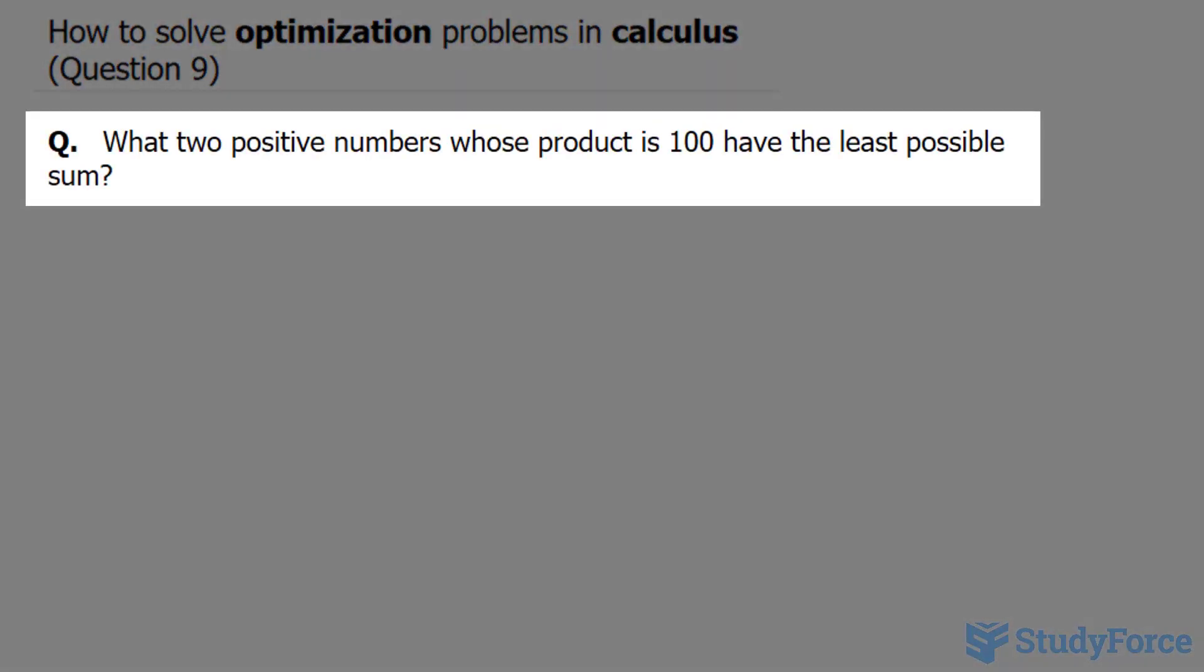In question nine of this series, we're asked what two positive numbers whose product is 100 have the least possible sum?